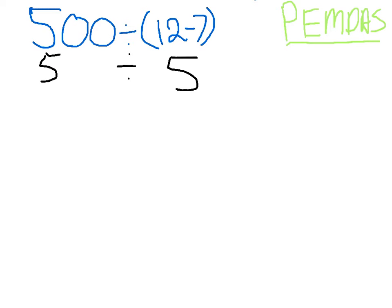Five hundred divided by five. Five hundred divided by five equals one hundred. So, I used order of operations in this problem to get one hundred.